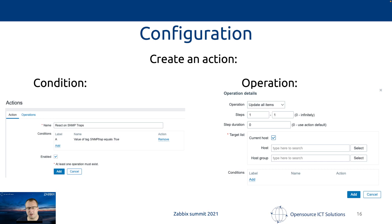It's not quite together yet — we still need an action. In that action, we tell Zebix: if a trap is received and the trap problem was generated, then execute something. To get the matching going, we use tags again — tag 'SNMPTrap' with the value 'true' — then execute the frontend script we just created. Execute it just once, but immediately, and on the host where the trap was received.